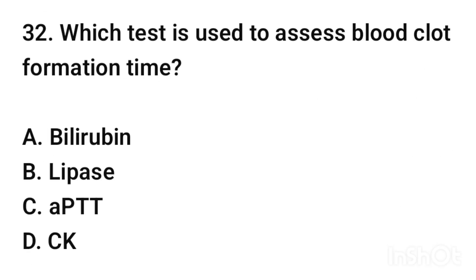Question number 32. Which test is used to assess blood clot formation time? The correct answer is option C: APTT (Activated Partial Thromboplastin Time).